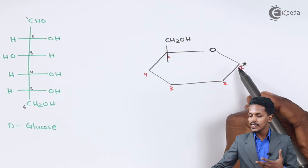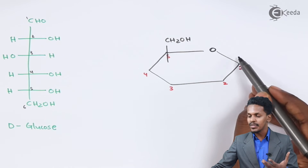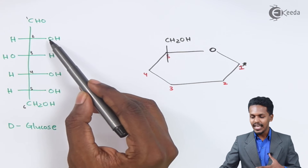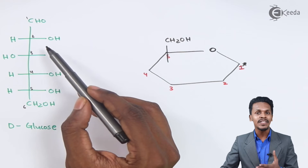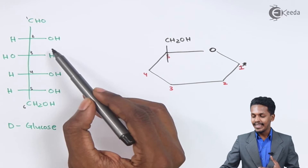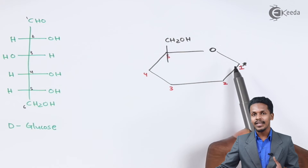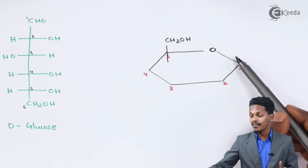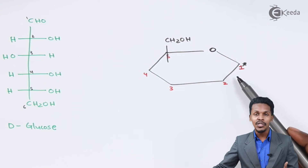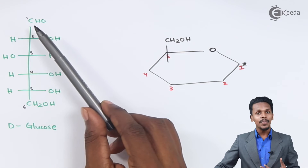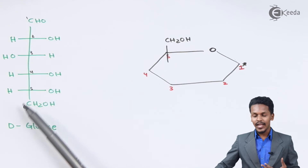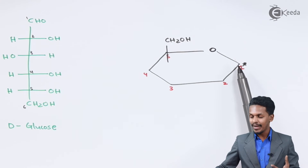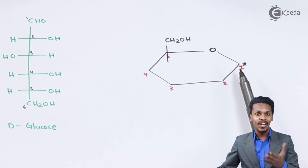Carbon number 1 is known as the anomeric carbon atom. This anomeric carbon determines whether the OH is on the upper side or the lower side. From rules 2 and 3, if the OH is on the right in Fischer it is represented downward in Haworth. For D-glucose, if the OH at the anomeric carbon is upward, it is called beta.